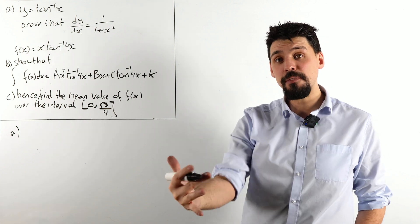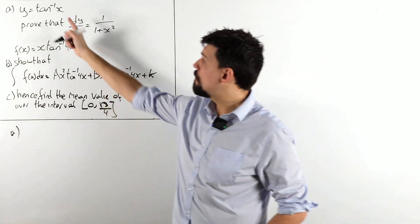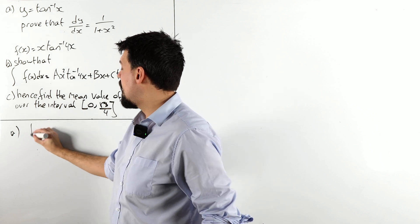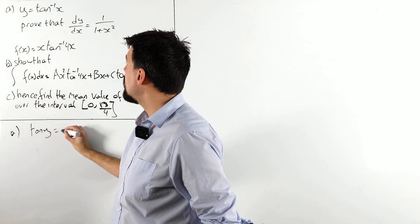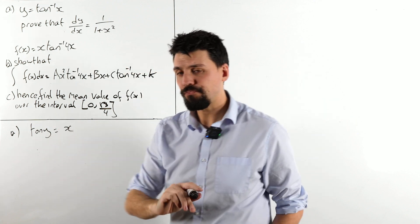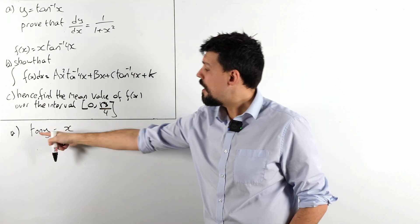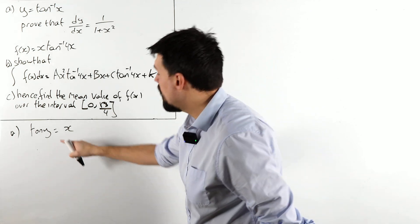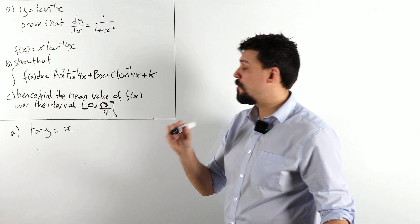As always, when differentiating an inverse function, you want to flip this notation over and instead write that tan y is x. Brilliant, because I know how to differentiate tan. Now we're going to differentiate both sides with respect to x.